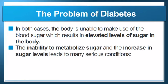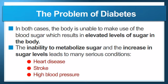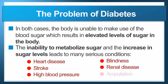In both cases, the body is unable to make use of the blood sugar, resulting in elevated sugar levels. The inability to metabolize sugar and the increase in sugar levels leads to many serious conditions, including heart disease, stroke, high blood pressure, blindness, renal disease, amputation, and many others. As you can imagine, these conditions are heartbreaking when experienced by children.